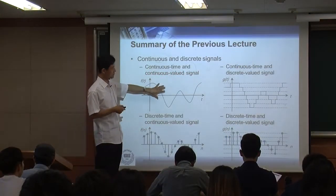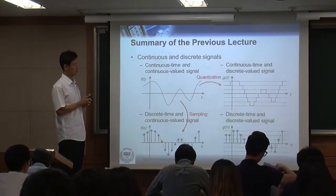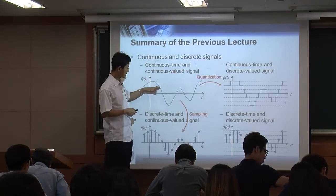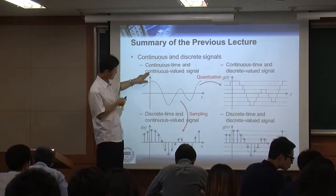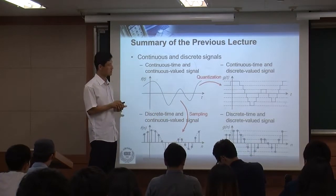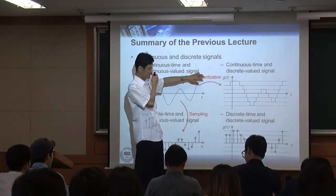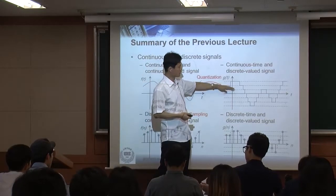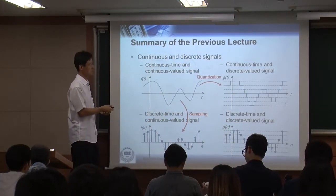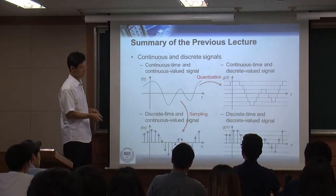In order to convert from analog to digital signals, we go through two steps. First is sampling, and the second is quantization. Sampling makes the continuous time signal into a discrete time signal. Quantization changes the continuous value to a discrete value — you see a staircase signal — so using these two techniques you change an analog signal to a digital signal.